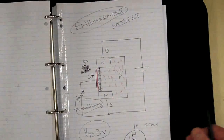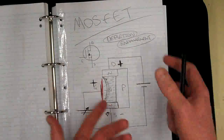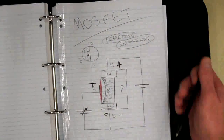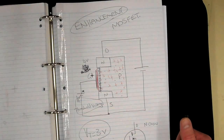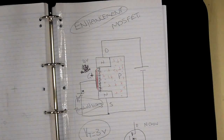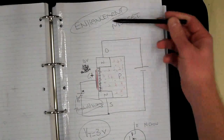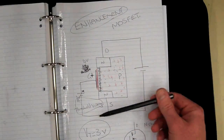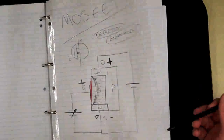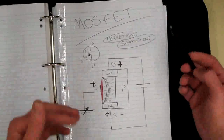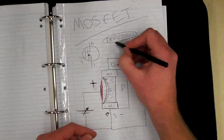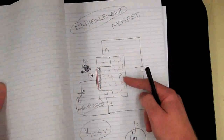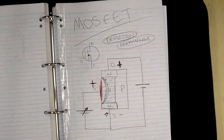I won't go into the P-channel — it works very similarly to this, with everything just reversed: power supplies reversed and N and P-type substrate reversed. To summarize: the Enhancement MOSFET needs to reach the threshold voltage to get current to flow. The Depletion Enhancement MOSFET works either like a JFET — depleting the channel — or like an Enhancement MOSFET by simply reversing the polarity on the gate.